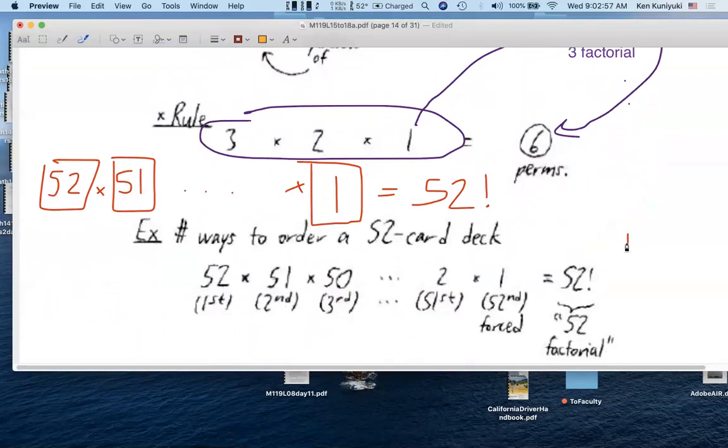On your calculator, you should see an n factorial button, or if you have a TI calculator, it might be in the PRB menu.